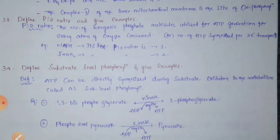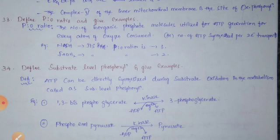Define P:O ratio and give examples. P:O ratio is the number of inorganic phosphate molecules utilized for ATP generation per atom of oxygen consumed, or the number of ATP molecules synthesized per two electrons transported. NADH can generate 3 ATP molecules using 3 phosphate molecules, so the NADH P:O ratio is 3. FADH2 can generate 2 ATP molecules using 2 phosphate molecules, so the FADH2 P:O ratio is 2.